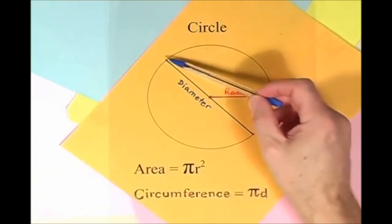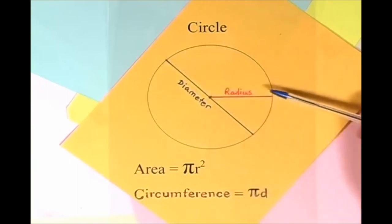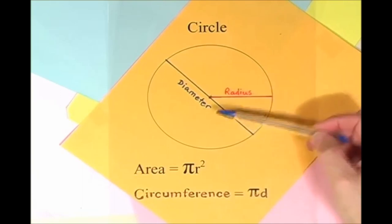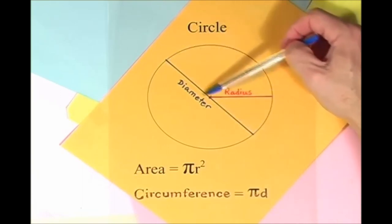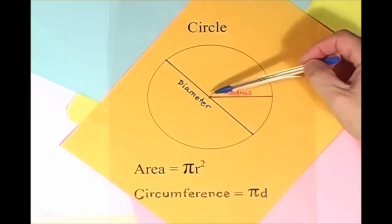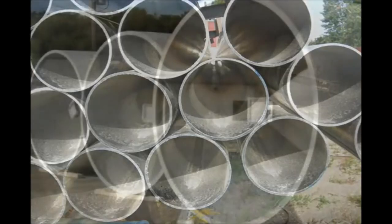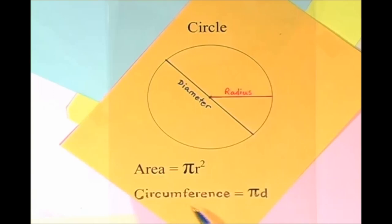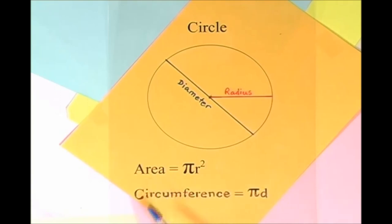Here is a circle, it knows how to get around. It has a radius from center to rim. And its diameter's a line that goes from side to side while passing through the center, now isn't that simple. Pi r squared sounds like area to me, when I need a circumference, I'll just use pi d.